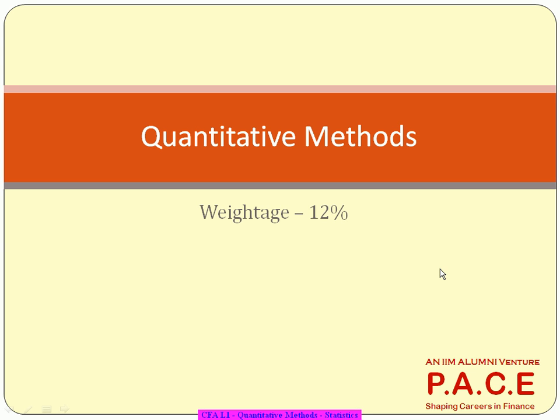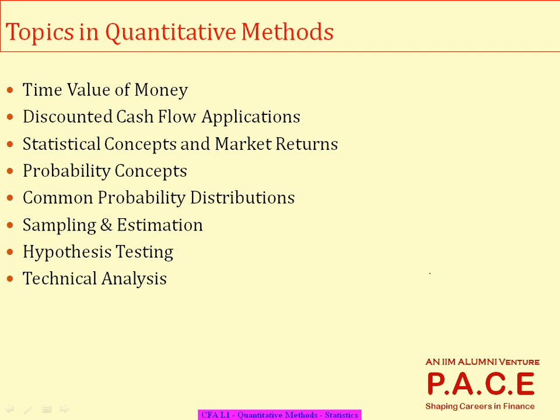Let's start off with our module's first subject, which is quantitative methods. It contains almost 12% weightage, translating to around 28 questions in the exam — 14 in the morning and 14 in the afternoon. These are the topics, which CFA calls readings, but you can treat them as chapters. There are 8 chapters constituting the quant.